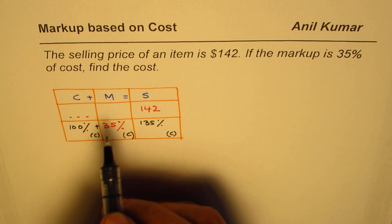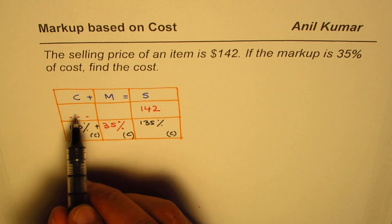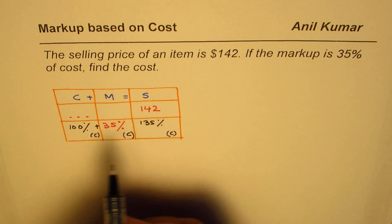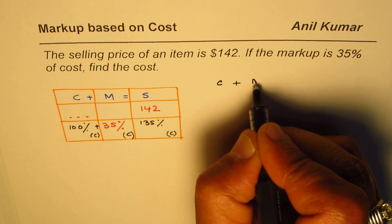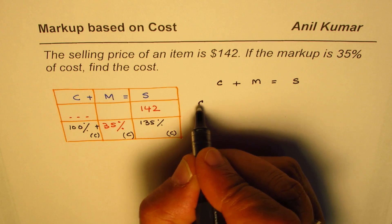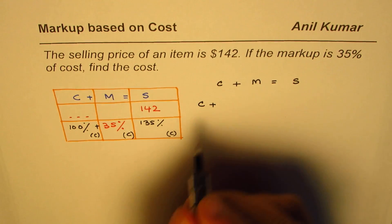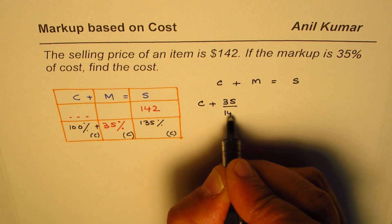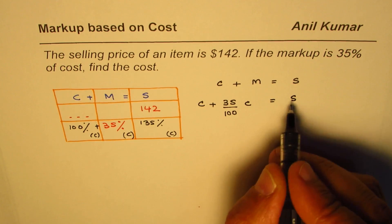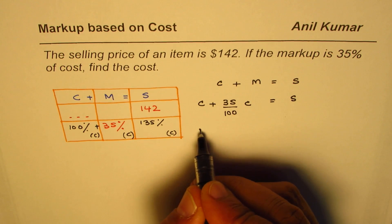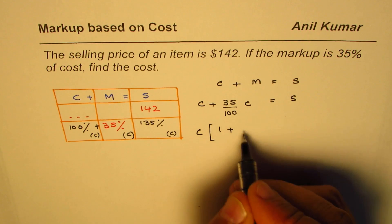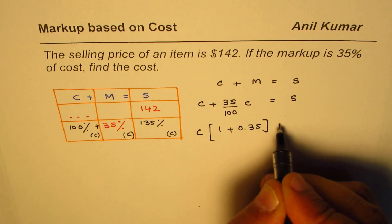Cost price plus markup equals selling price. Markup is 35% of cost price, so cost plus 35% of cost equals selling price. We can take C common: 1 plus 35 divided by 100, which is 0.35, equals selling price of $142.